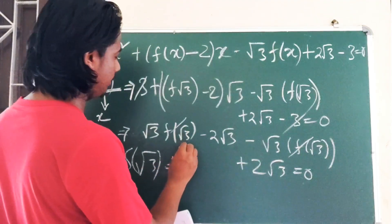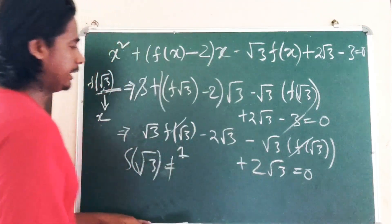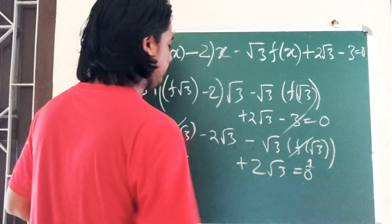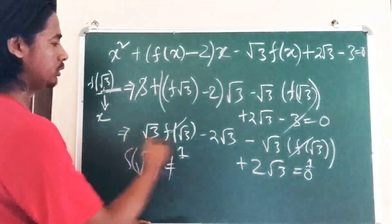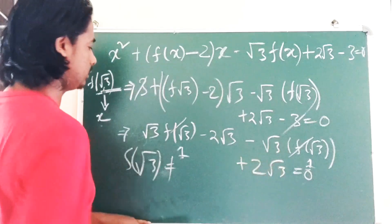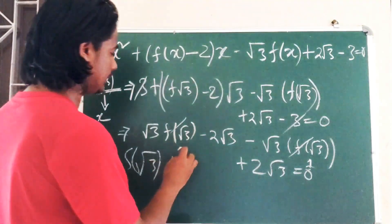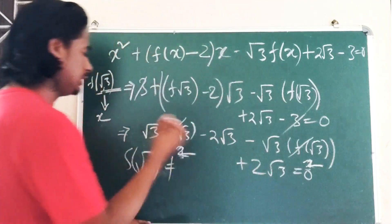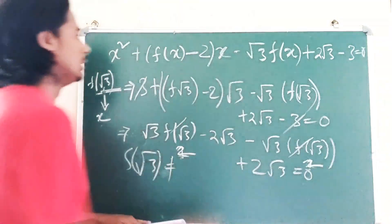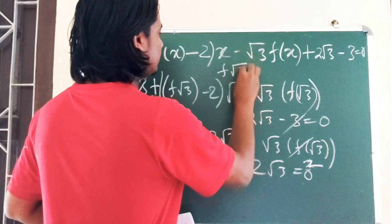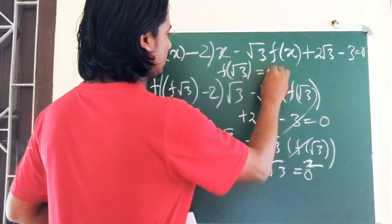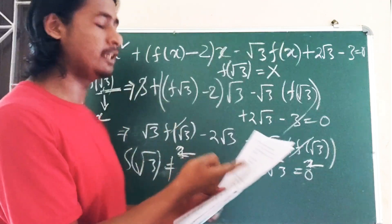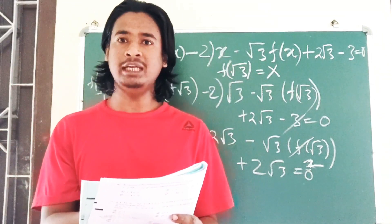Since the equation is satisfied for any value of f(√3) — whether we try 1, 2, 3, or any number — we cannot determine a particular unique value of f(√3) from this equation. Therefore, the correct answer is: cannot be determined.